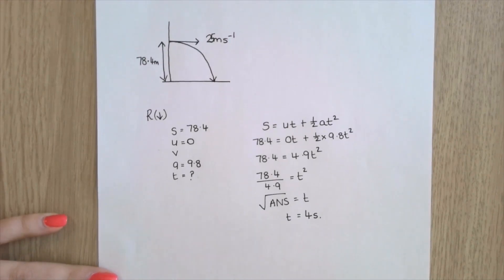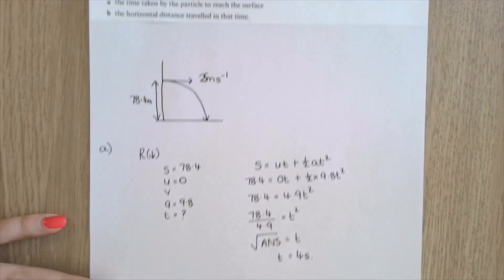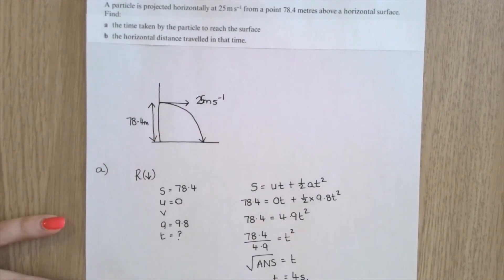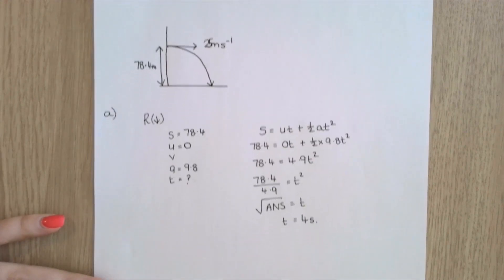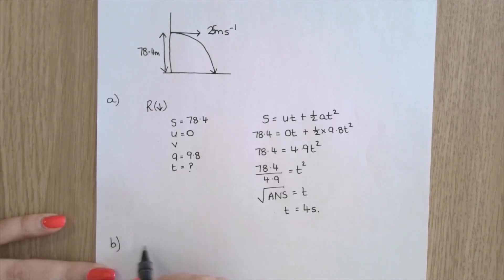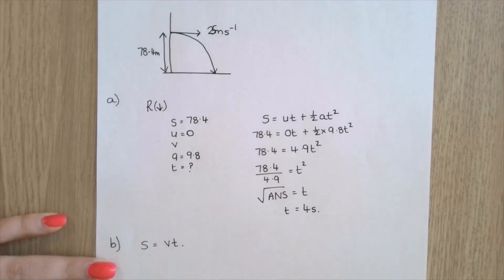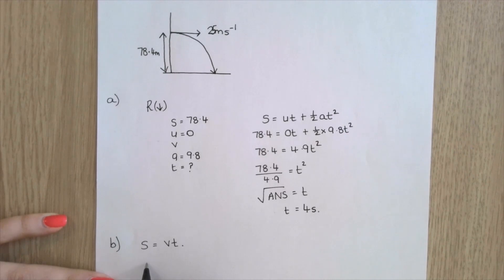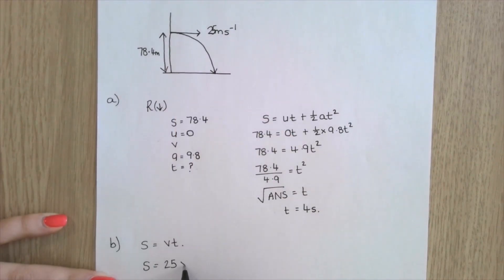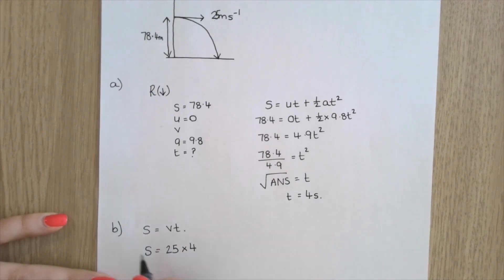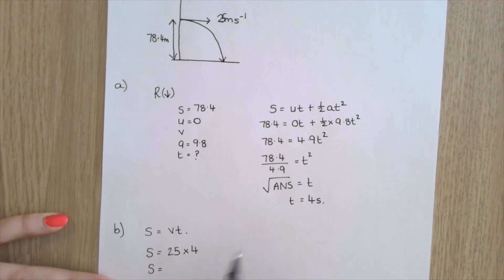Part b: find the horizontal distance travelled. Using s = vt, the horizontal displacement equals 25 × 4 = 100 metres.